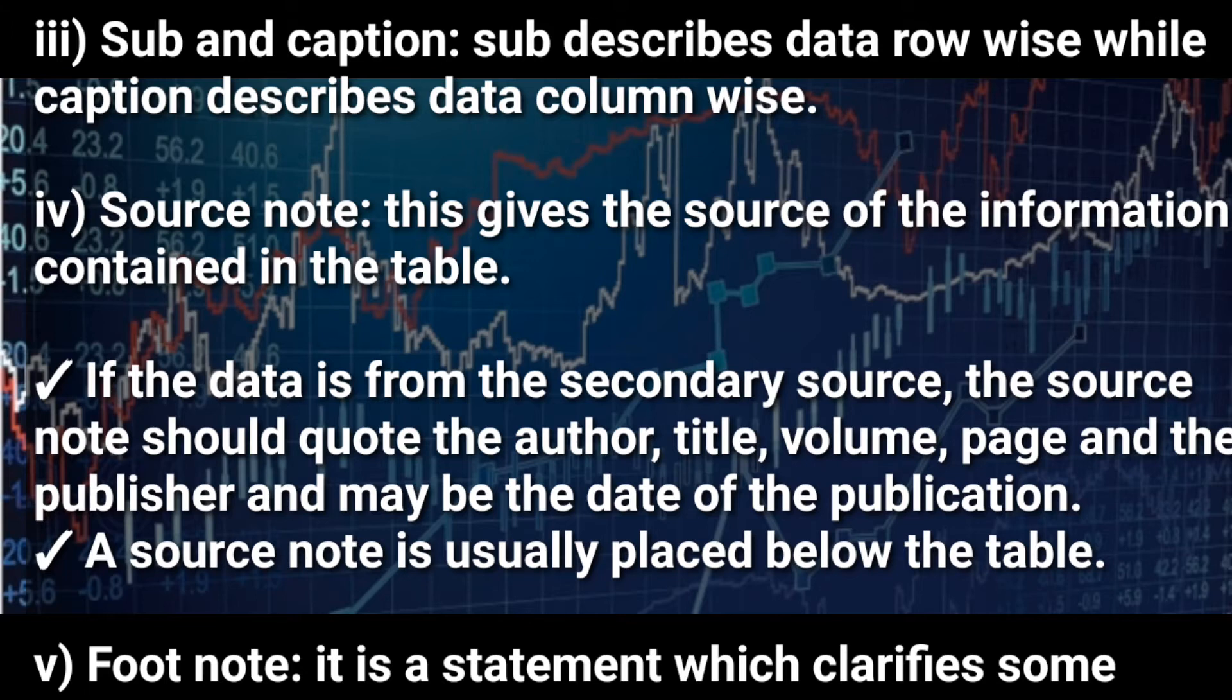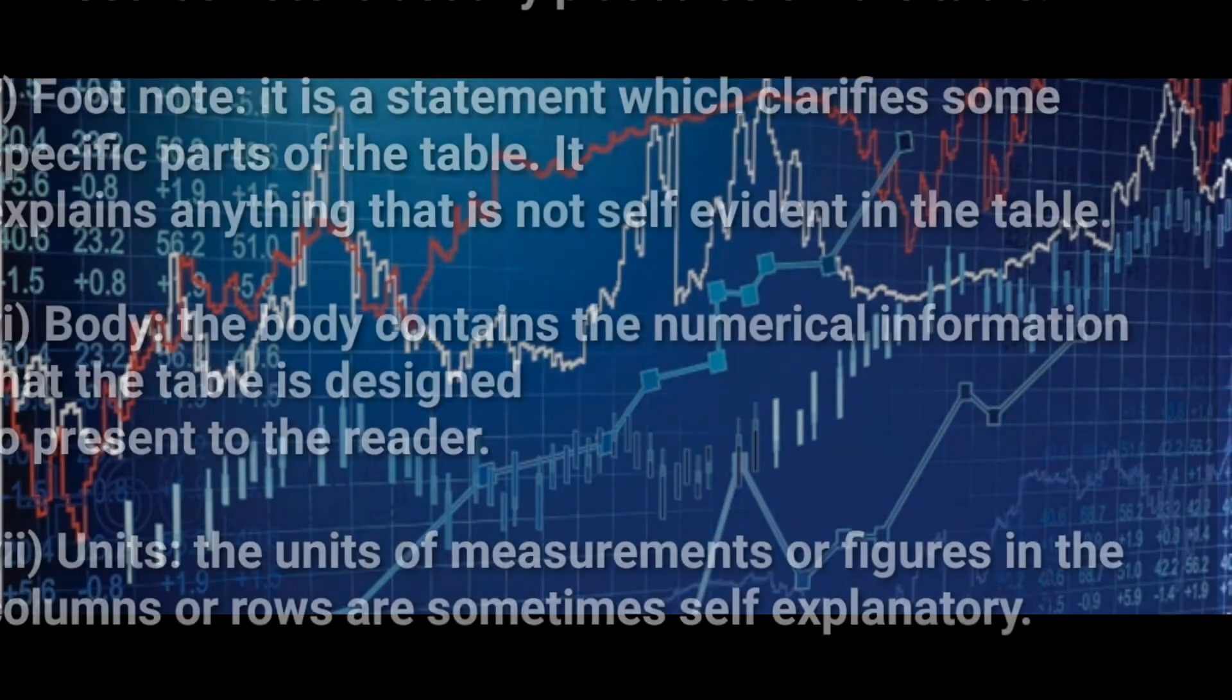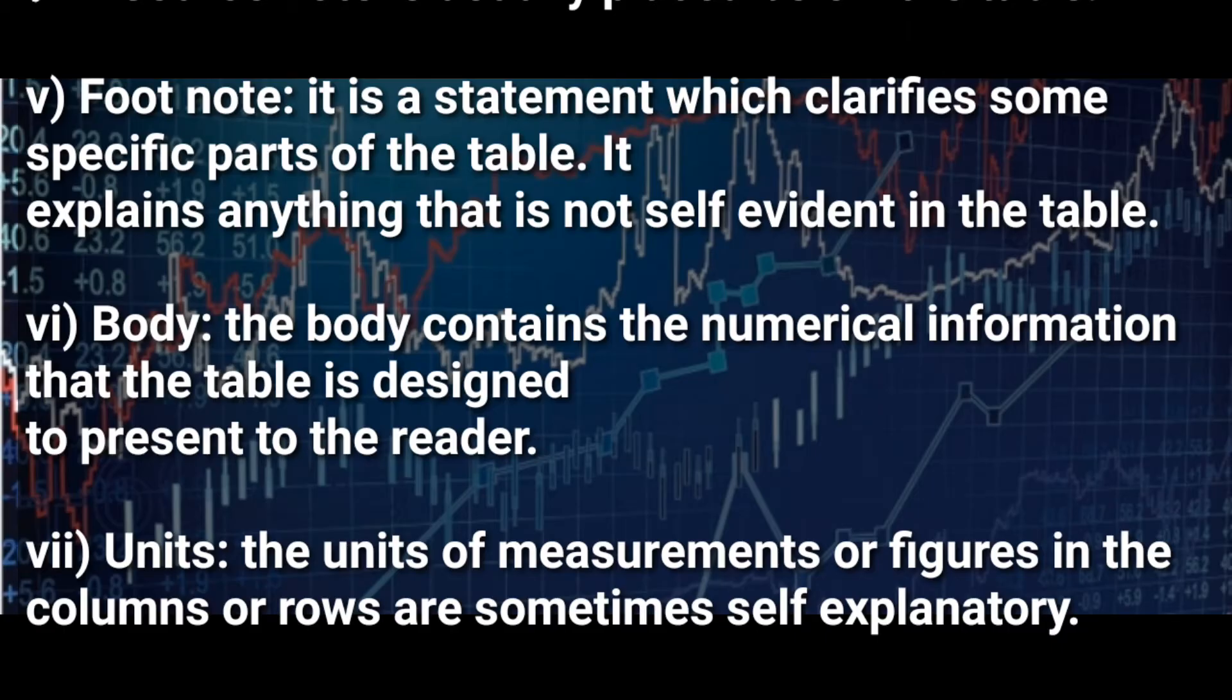Another feature of a good table is a footnote. A footnote is a statement which clarifies some specific parts of the table. It is also written below the table. It explains things that are not self-evident in the table. Maybe you put some figures like one, two, three, so you come down and explain: one means this, two means that.